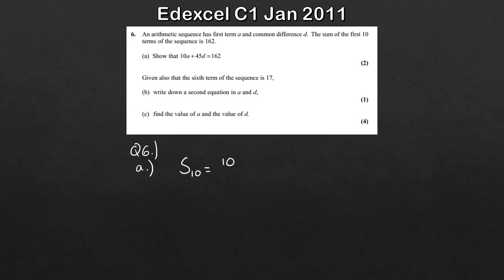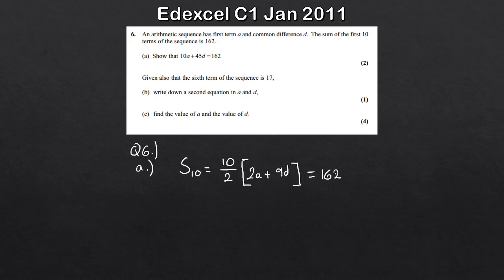The formula gives us N over 2, so that's 10 over 2 because N is 10. We multiply that by 2A plus (N minus 1)D. So 2A stays as 2A, and N minus 1 is 10 minus 1 which gives us 9D. We know the sum of the first 10 terms equals 162, so 10 over 2 is 5, giving us 5 times (2A plus 9D) equals 162.